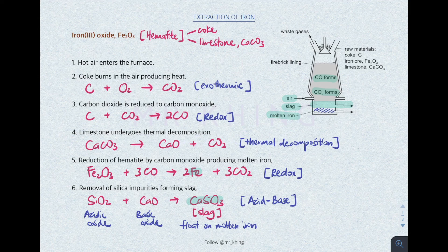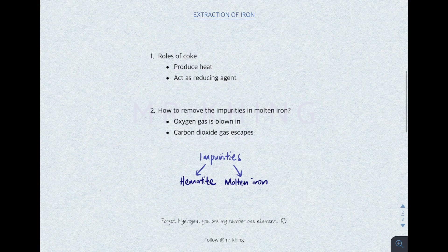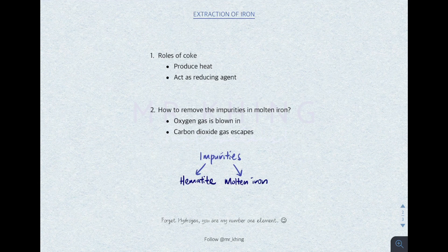You have to remember every single chemical equation here — these are all the steps needed to extract iron from the hematite. Here are some popular exam questions. First: what are the roles of carbon, and why is coke added into the hematite? There are two roles: first is to produce heat — carbon reacts with oxygen to form carbon dioxide, producing heat; second is to act as a reducing agent — the carbon monoxide produced is used to reduce the hematite to produce iron.